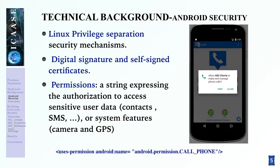Let's turn to some technical details about the Android security model. Android is based on Linux and therefore inherits its privilege separation security mechanisms. Second, application developers use digital signatures and self-certified certificates to establish the trust relationship with end users. Third, Android implements a mechanism of permissions which forces applications to ask for authorization before accessing sensitive user data or system features such as camera or GPS. The phone screen on the right shows a legitimate application asking for permission to make a phone call.